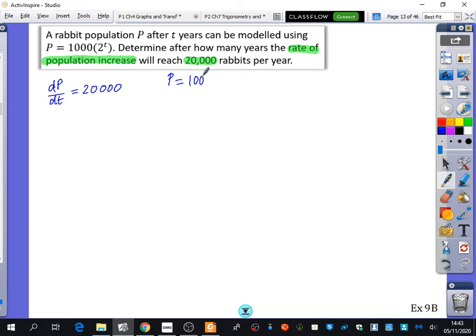So, we want to know when dp dt is 20,000. So, if P is 1,000 multiplied by 2 to the power of T, we're going to find out what dp dt is. Redwan, do you think you could differentiate that for me? Yeah, you can have a look at the thing. Good. 1,000 ln2 times 2 to the power of T. And remember, we've still got the 1,000 there as well. So, I'm going to just put the 1,000 at the beginning like that. So, that's the thing differentiated.